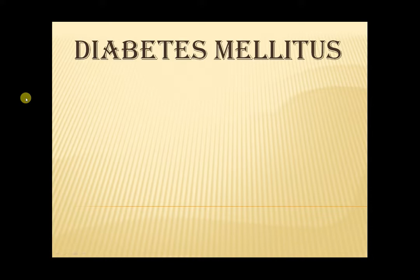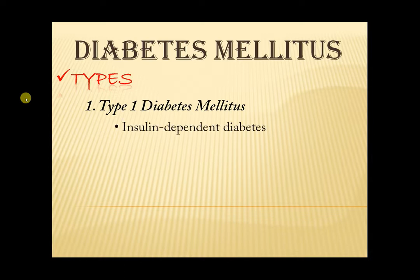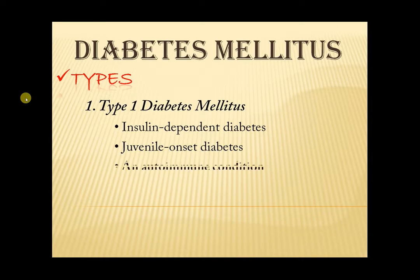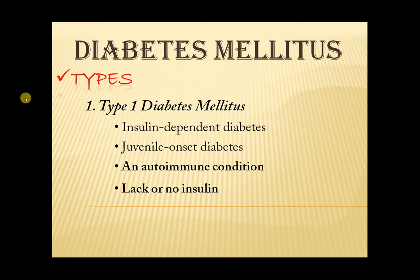Let's now proceed to types of Diabetes mellitus. First, Type 1 Diabetes mellitus. It is an insulin-dependent diabetes and also called juvenile onset diabetes because it often begins during childhood. It is an autoimmune condition which means your body attacks your pancreas, specifically the beta cells. This results to lack or no insulin at all. Since there is little or no insulin being produced by the beta cells in the pancreas, the glucose in your bloodstream will be high. It cannot enter the cells because there is not enough insulin to facilitate them to go inside. It is the most common form of diabetes in people who are under 20 years of age.